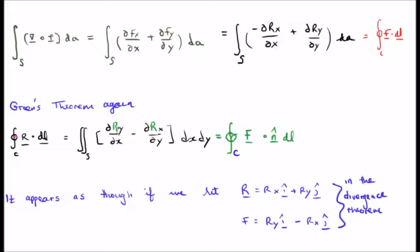Let's go back to Green's theorem. So Green's theorem, we started out with the vector field r, and we had this expression here on the left. But we found, through a small bit of a sleight of hand, that this is equivalent to the closed line integral of a new vector field F dot n hat dl.